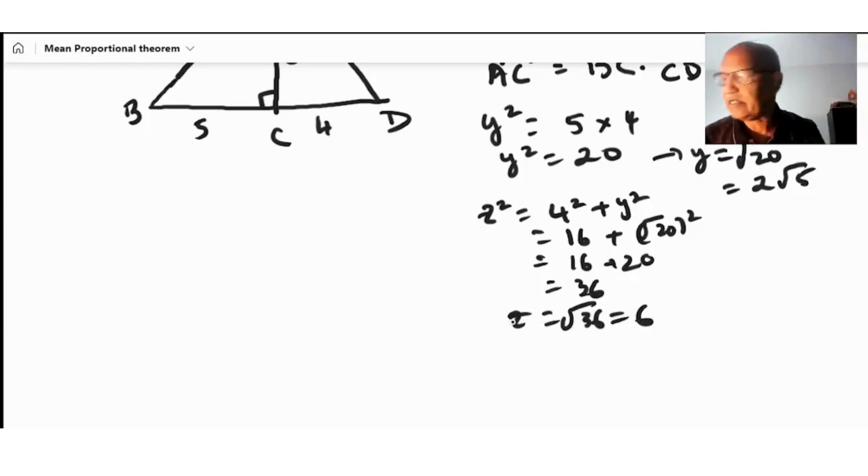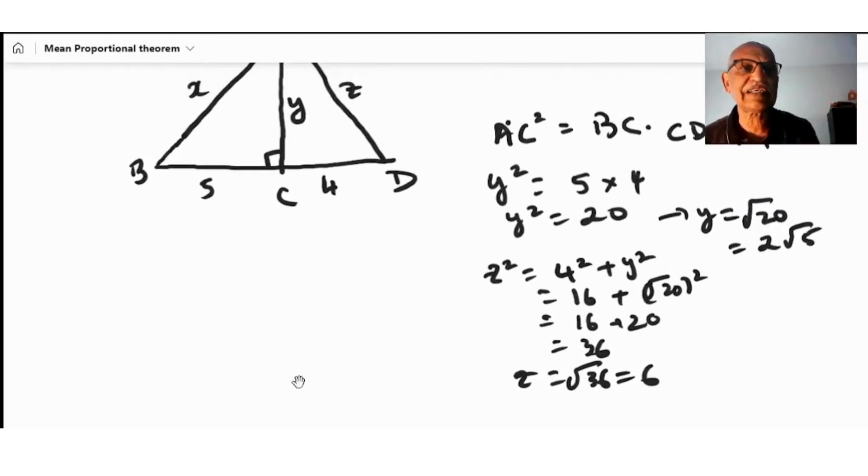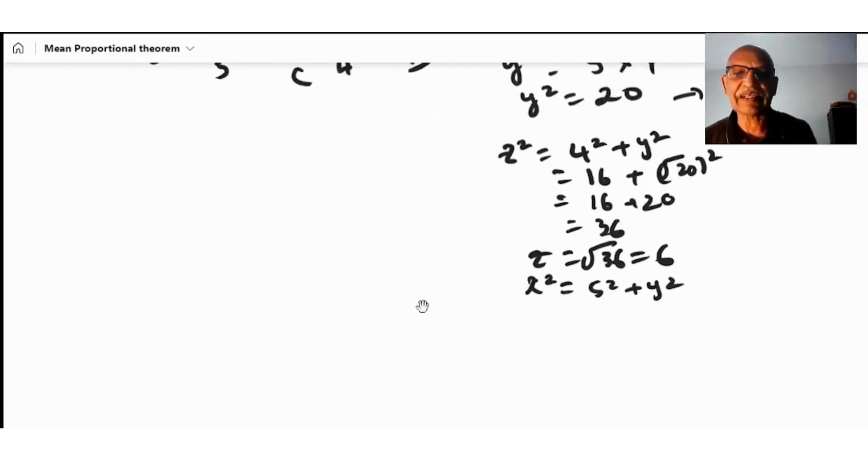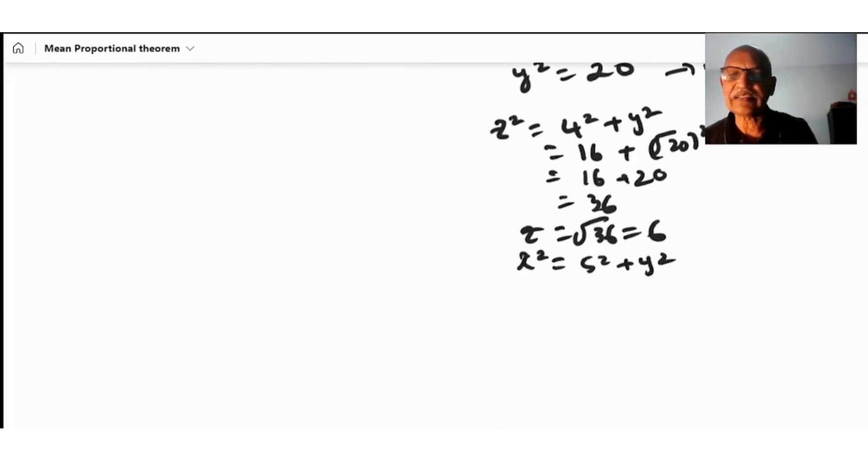Now we can find x. x squared is equal to y squared plus 5 squared. Now we can find x since y squared is square root of 20 squared.